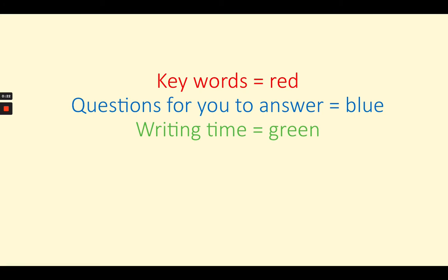As always, key words throughout today's lesson will be found in red. These could be vocabulary words or sentence starters from your strategy prompt sheet. Questions for you to answer will be found in blue, and time for you to do some writing and answering of these questions will be found in green.